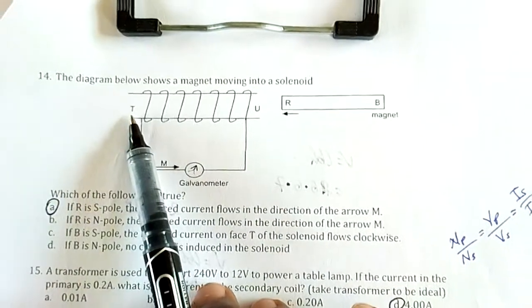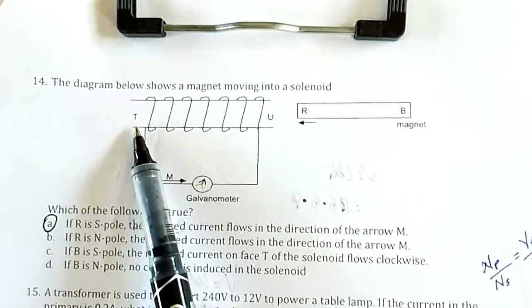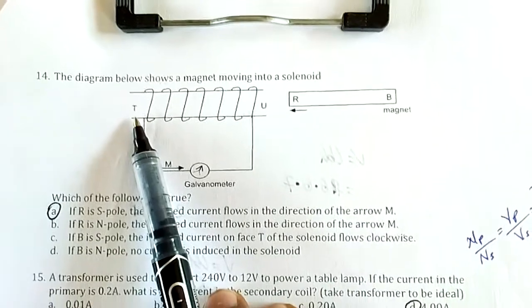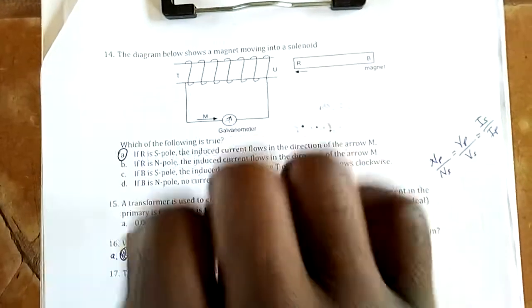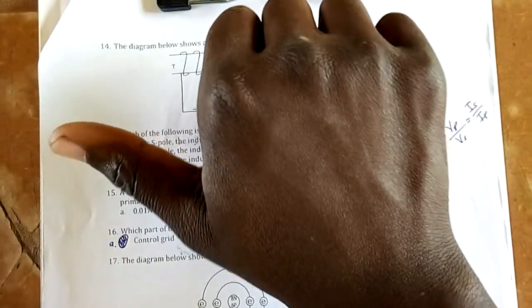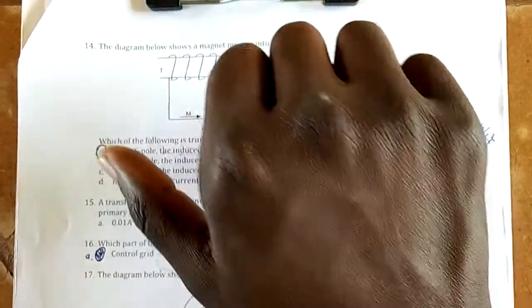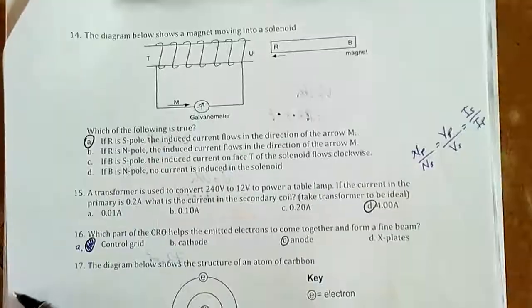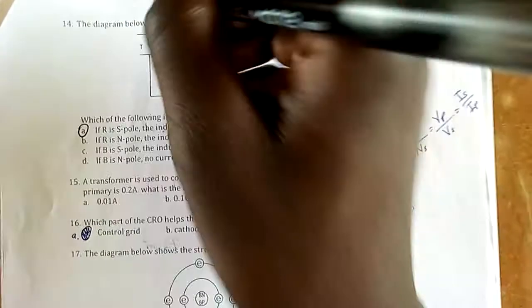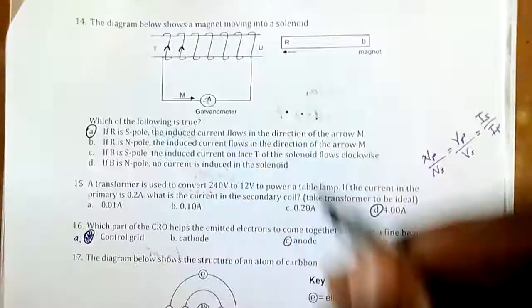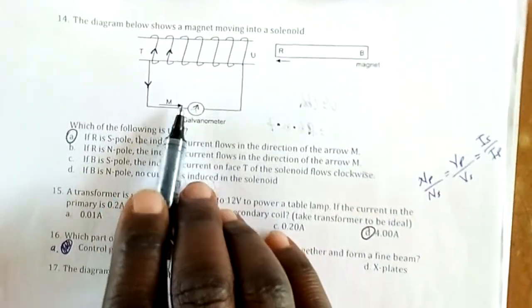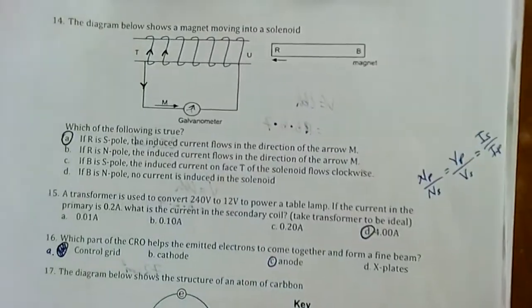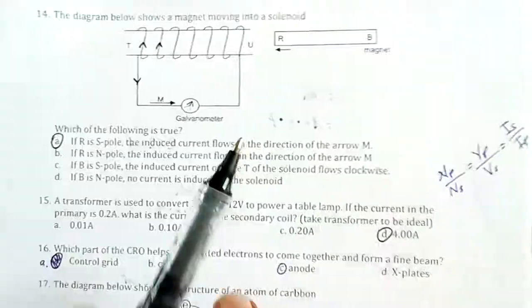To know the direction of current, we use the right-hand grip on a solenoid. My fingers show the direction of current, and the thumb shows the direction of north or points north. This will be my north, and my fingers, meaning the direction of current in the solenoid, is going to be upwards. Current goes behind there, then comes down and moves in the direction of M. The galvanometer is deflecting in the direction of current. So my answer is A.